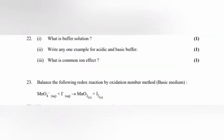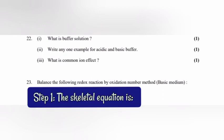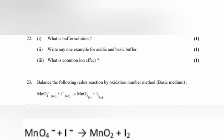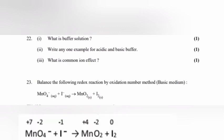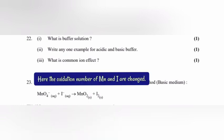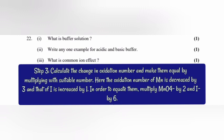Question 23: Balance the following redox reaction by oxidation number method. Answer: Step 1, the skeletal equation is written. Step 2, assign the oxidation number of each element and identify the elements undergoing change in oxidation number. Here, the oxidation number of Mn and I are changed. Step 3, calculate the change in oxidation number and make them equal by multiplying with suitable number. Here, the oxidation number of Mn is decreased by 3 and that of I is increased by 1. In order to equate them, multiply MnO4 minus by 2 and I minus by 6.